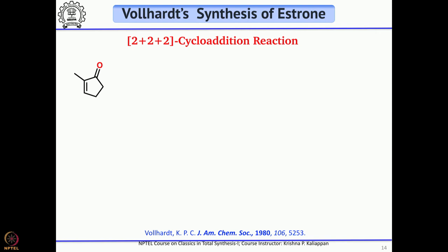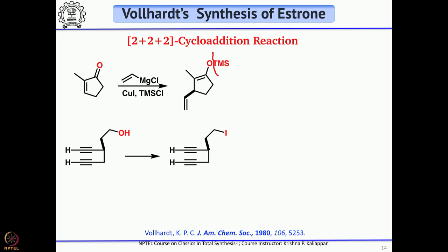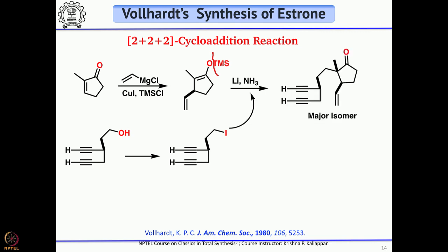For the other fragment, you start from 2-methylcyclopentenone and carry out a vinyl 1,4-addition with vinyl magnesium bromide and cuprous iodide, then quench the resultant enolate with TMS chloride. The enolate is thus trapped as the TMS enol ether. The TMS ether can then be cleaved with either methyllithium or lithium in ammonia to generate the lithium enolate. Once you generate the lithium enolate, you quench it with the iodide already prepared from the alcohol, and you get the major product.